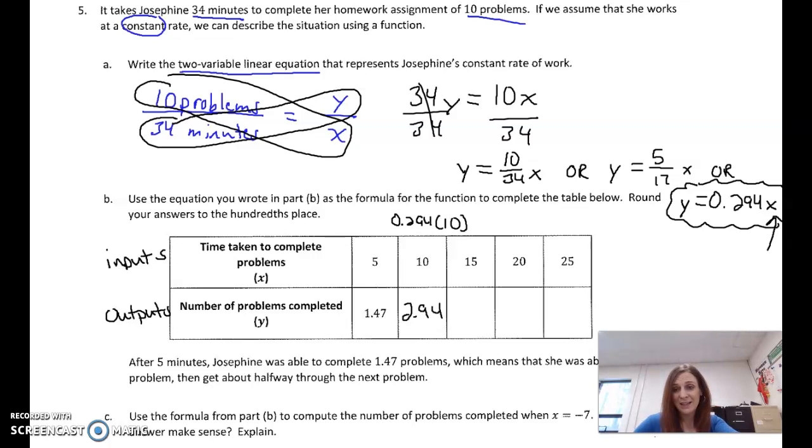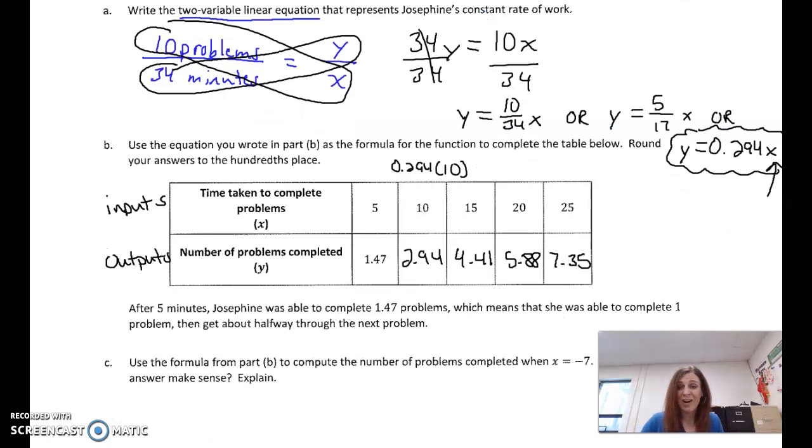And then if we go 15, input a 15 here, we get 4.41. If we input a 20, we get 5.88. If we input a 25, we get 7.35. So again, we've done all of this before. We wrote the equation, we're plugging numbers in. We can handle that.